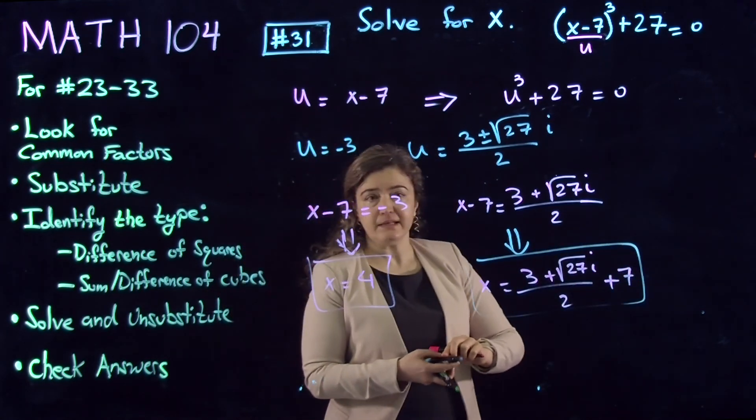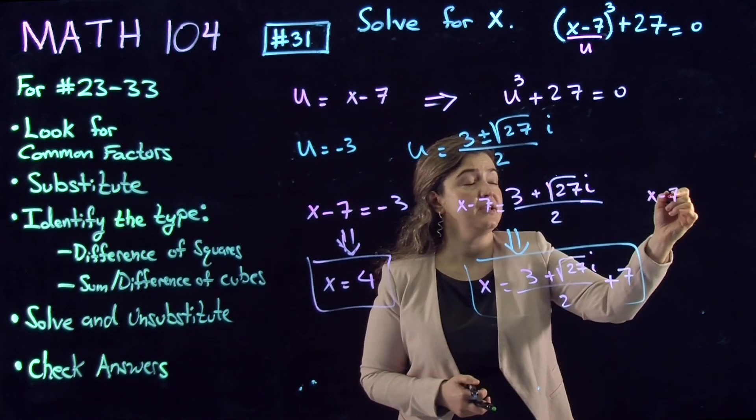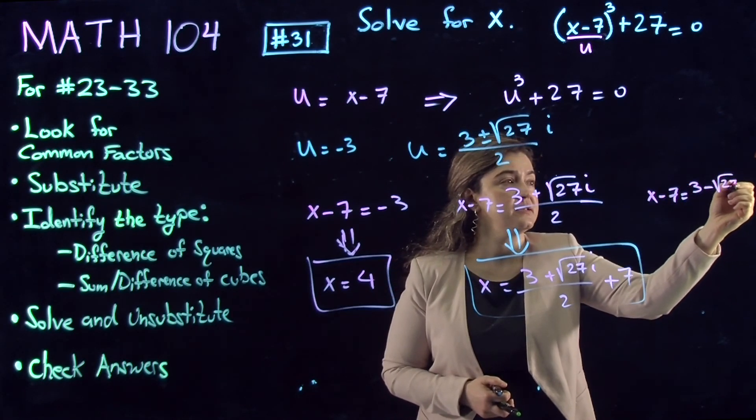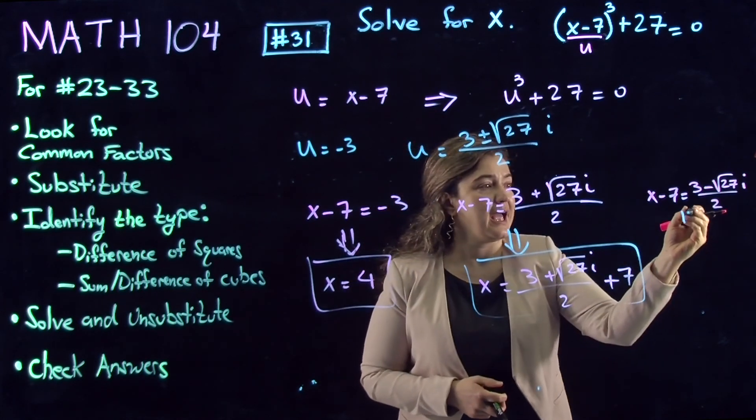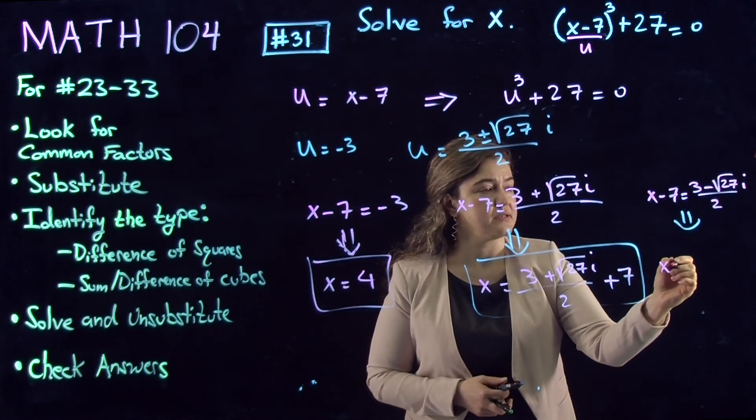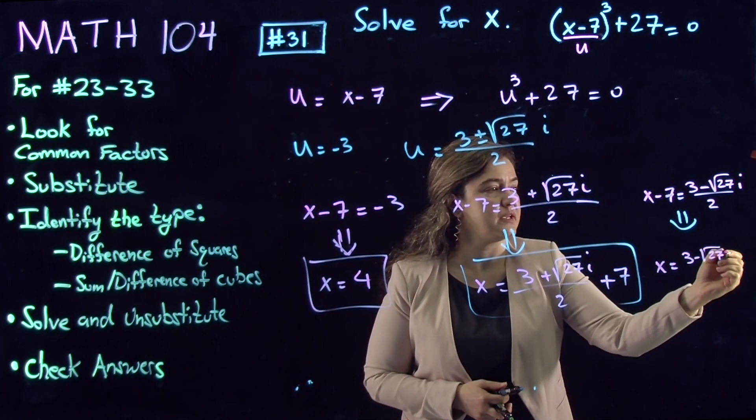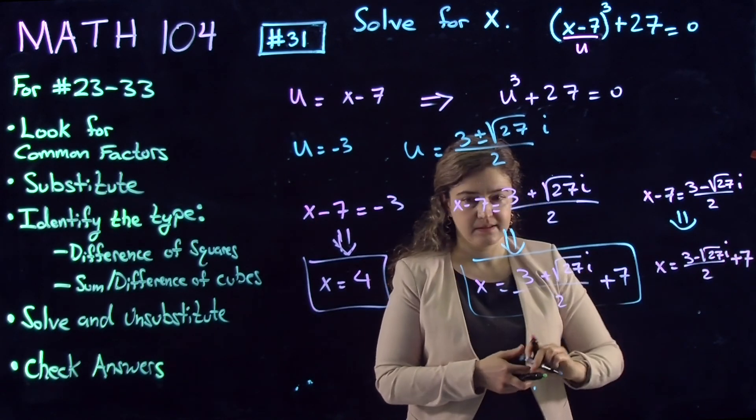And then the last one is x-7 = (3-√27i)/2. Adding 7 to the other side gives you x = (3-√27i)/2 + 7.